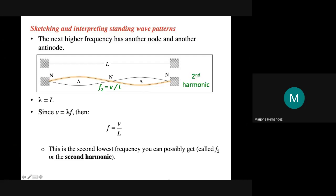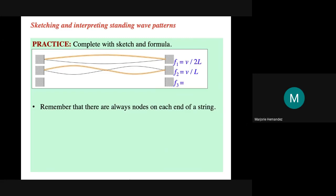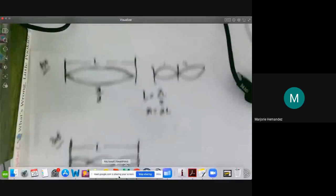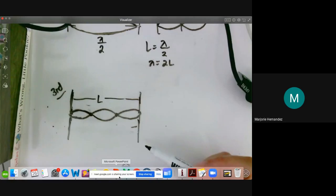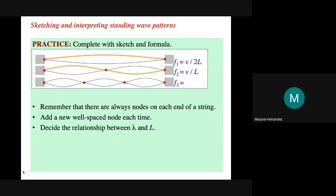Let's have some practice. If first harmonic is V over 2L and second harmonic is V over L, what would be the third harmonic? Remember there are always nodes at each end of the string. For the first harmonic we have two nodes, for the second harmonic three nodes, so for the third harmonic we will have four nodes. We can draw the shape accordingly — this will be the shape of the third harmonic.